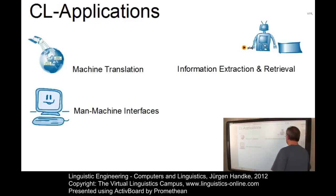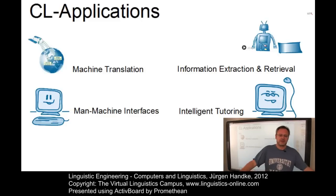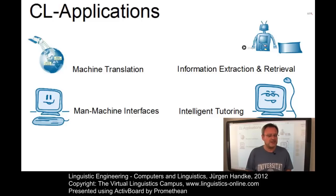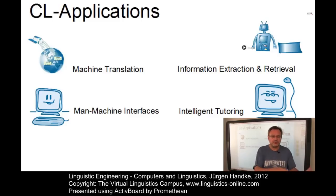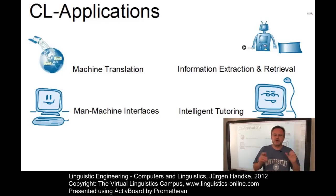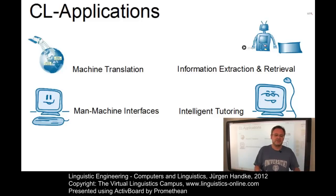Last but not least, as already mentioned, intelligent tutoring: intelligent tutoring systems attempt to mimic human teaching methods and behaviors using techniques from artificial intelligence. Natural language dialogue capability between learner and program is an important feature of these systems — this is where computational linguistics comes in. The development and theoretical underpinning of all these systems, which are experimental rather than operational in many cases, is a major goal of computational linguistics.